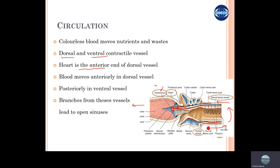These two dorsal and ventral vessels are basically connected with each other by this branching network of the arteries in the pharyngeal region.